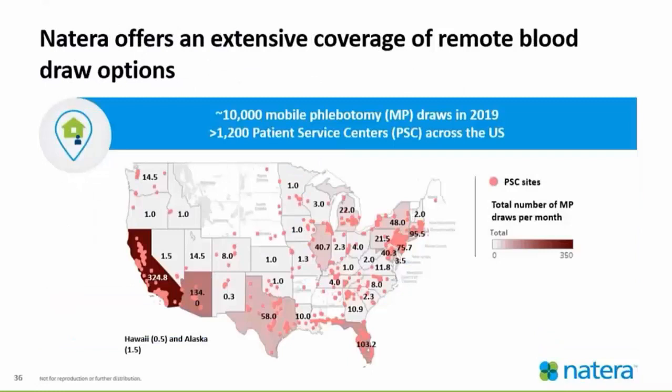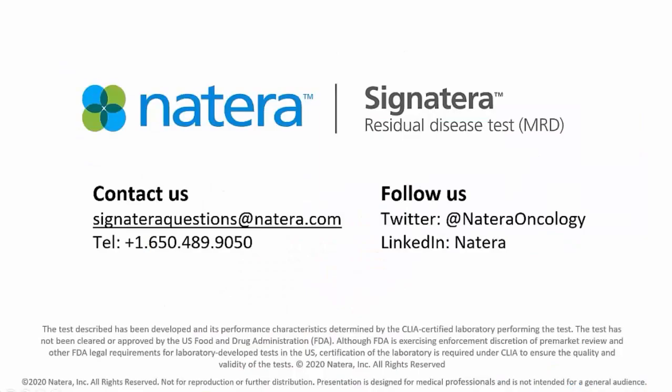Natera offers extensive coverage of remote blood draw locations. There are approximately 10,000 mobile phlebotomy sites in the U.S. and about 1,200 patient service centers across the U.S. Most states have this widely available to patients, which is quite helpful.